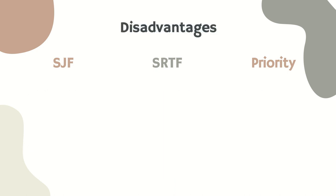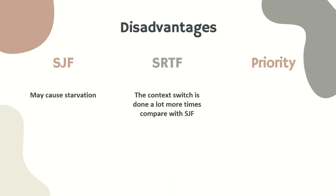These disadvantages of SJF may cause starvation. Meanwhile, for SRTF, the context switch is done a lot more times compared with SJF. And lastly, for priority scheduling, indefinite blocking may also cause starvation.